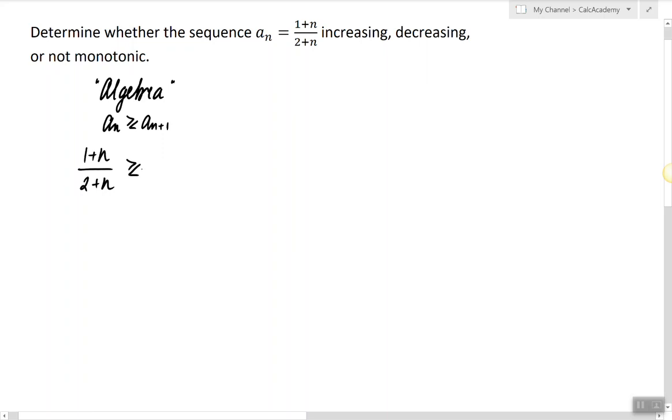So the nth term is 1 plus n over 2 plus n. The n plus 1 term is, I'm just going to replace n with n plus 1. Now, since n in particular is positive, we can multiply both sides by the product of the denominators here. So that means I can multiply both sides by n plus 2, n plus 3.